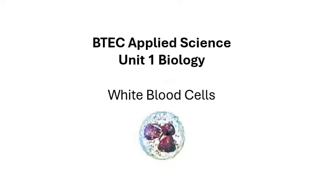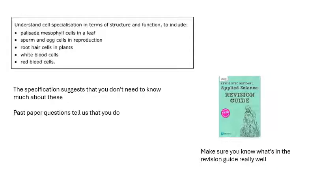BTech Applied Science, Unit One Biology — this is a whole video about white blood cells. Looking at the specification, it doesn't say very much: understand cell specialization, talk about structure and function, and it just says 'white blood cells.' I would say make sure you know what's in the revision guide, make sure you've learned and taken notes on that. There's a big fat textbook as well, but as a minimum, what's in the revision guide — and I'm going to try and cover what I reckon you need to know.